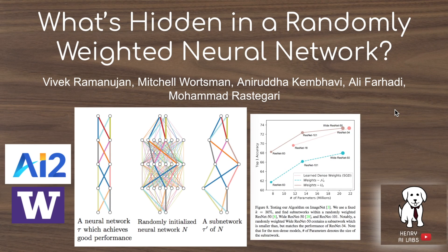This video will present the paper 'What's Hidden in a Randomly Weighted Neural Network.' Remarkably, this paper shows that given a randomly initialized Wide ResNet-50, you can find a subnetwork within this dense architecture that can outperform the ResNet-34 when the ResNet-34 has been trained with stochastic gradient descent, optimized for ImageNet classification. The Wide ResNet-50 subnetwork found with the algorithm presented in this paper has not been trained at all — the weights are still from this random distribution.